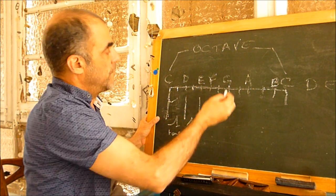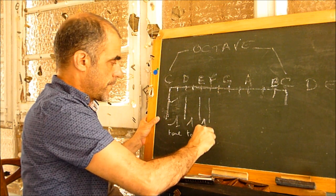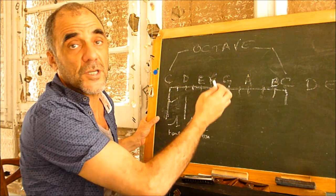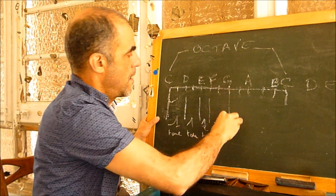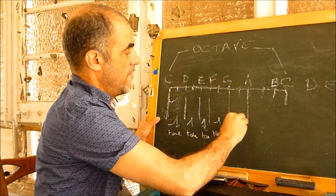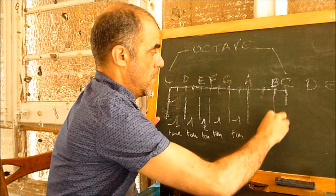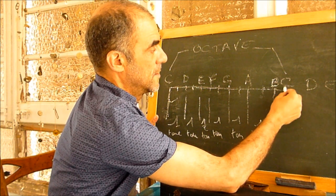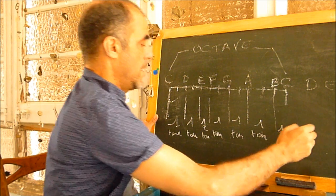From the third note to the fourth, we have only half one tone. From the fourth note to the fifth, we have two halftones, which is one tone. And from the fifth to the sixth, we have one tone. From the sixth to the seventh, one tone too. And from the seventh to the eighth, halftone.